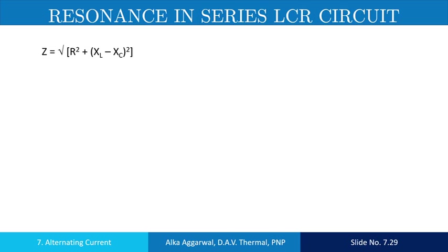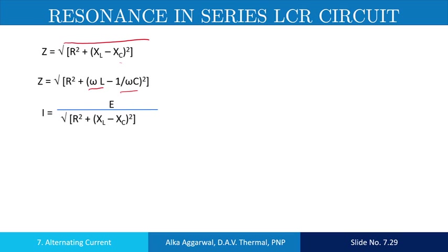The impedance of an LCR circuit is equal to the square root of R² plus (XL minus XC) whole squared. XL is equal to omega L and XC is equal to 1 upon omega C. So the impedance can be written in this way.